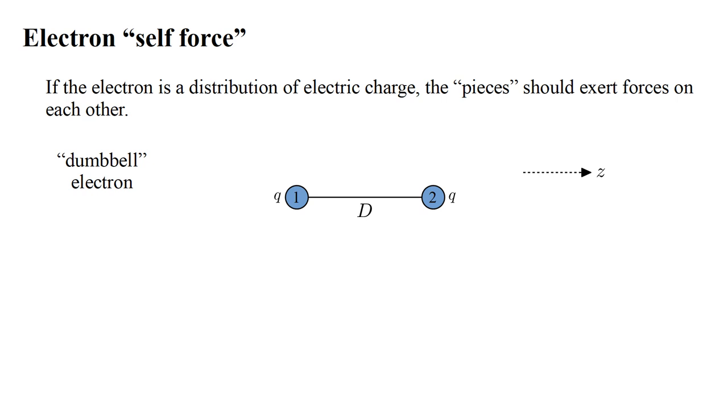Analyzing a spherical distribution of charge leads to difficult calculations. We will instead look at a toy problem: a dumbbell electron consisting of two parts separated by distance D along the z-axis. Each part is a half electron, a point mass with charge Q, half of the total electron charge.